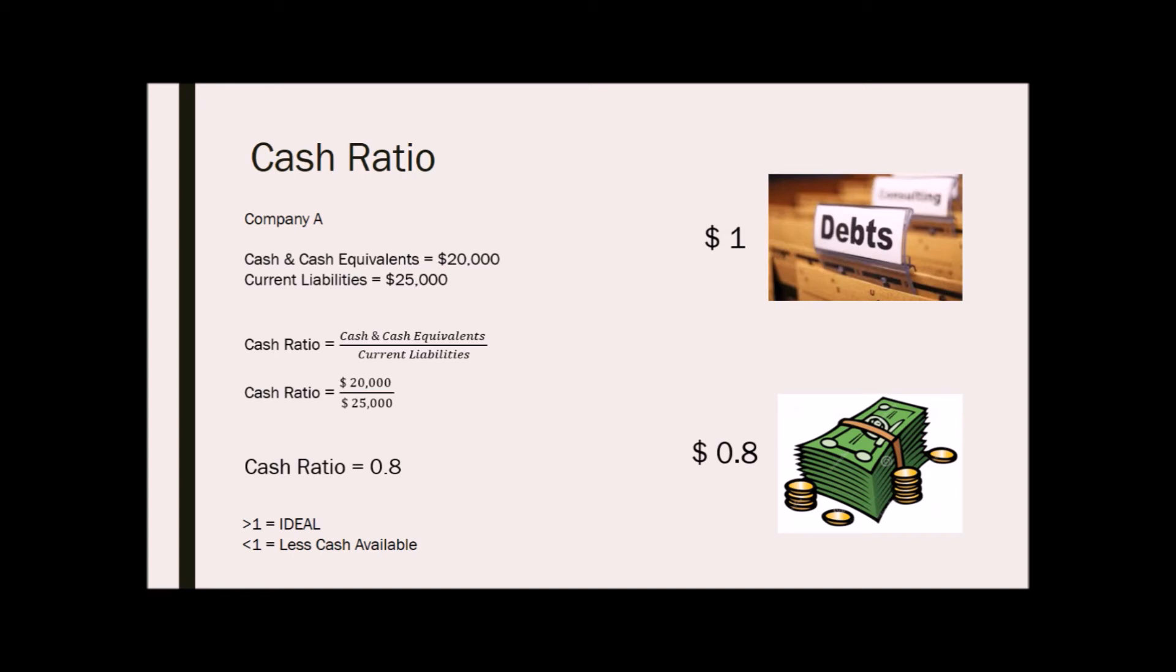A ratio of 1 means that the company has same amount of cash equivalents as it has current debt. In other words, in order to pay off its debt, the company would have to use all of its cash equivalents. A ratio of above 1 means that all current liabilities can be paid with cash equivalents. While a ratio below 1 means the company needs more than just its cash reserves to pay off its current debt.